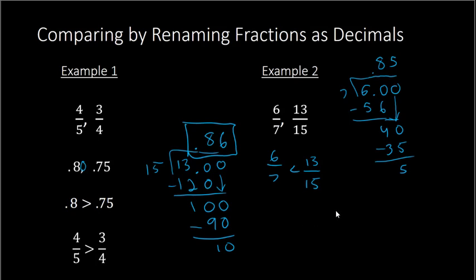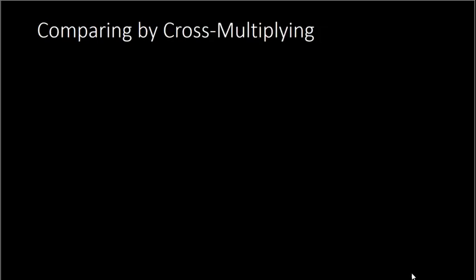Now the second approach that we could use is by using a process called cross-multiplying. We're going to take the same exact fractions we used in the previous slide, and we're going to show this other method. We had 4 fifths and 3 fourths as our first set of fractions. It's color-coordinated to help you visualize what we're doing. The process is really in the name itself.